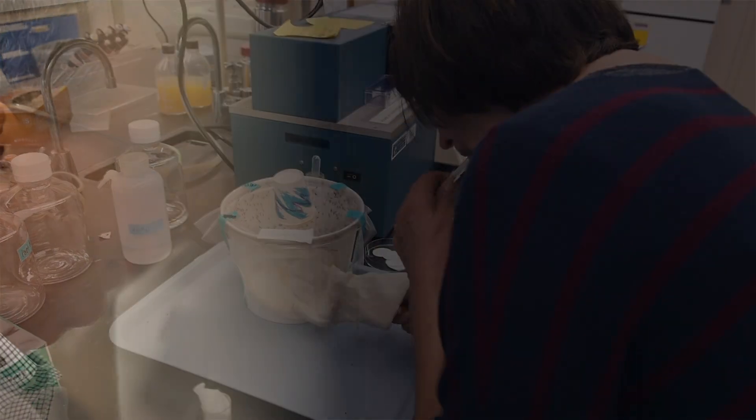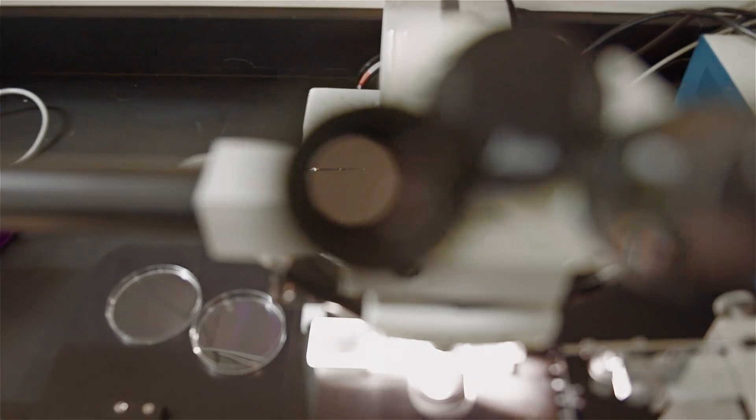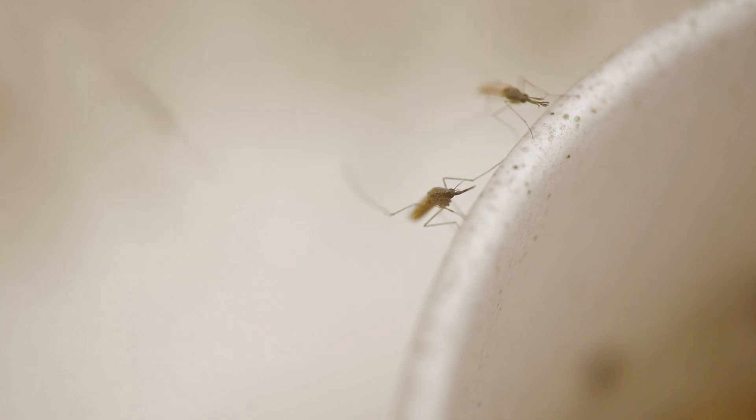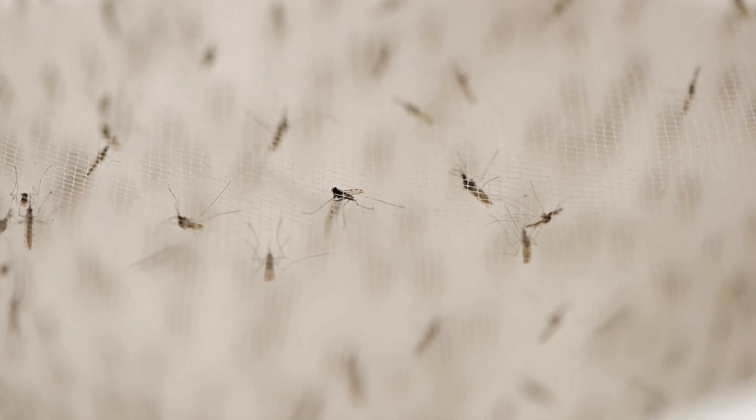We have microscopes and very small needles that allow us to inject the DNA into the mosquito eggs. We take those eggs, hatch out the mosquitoes, grow them up to adults, and then mate them. Then in that next generation, if we see our gene, we know we've actually hit the target tissue, which are the future sperm or the future eggs.